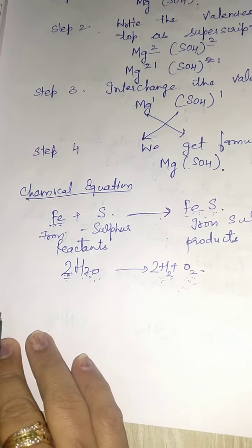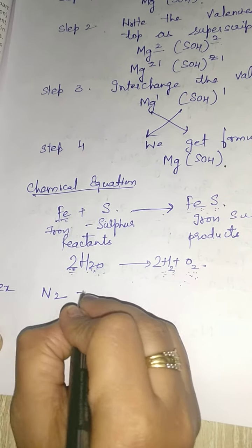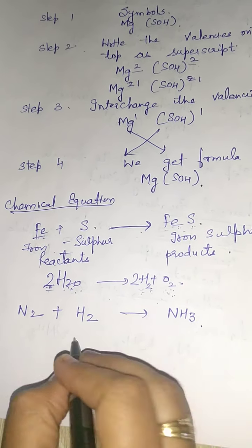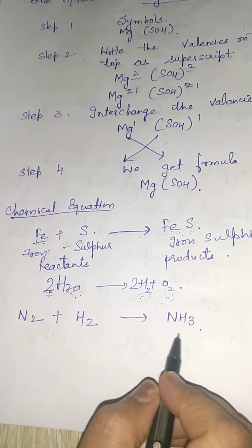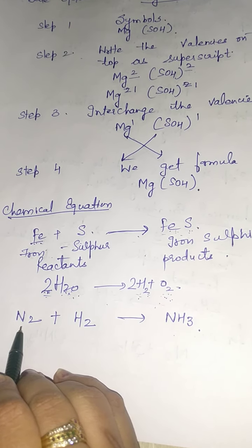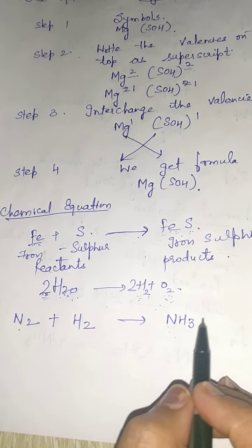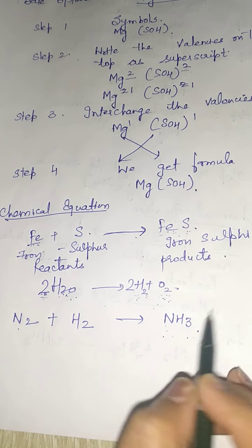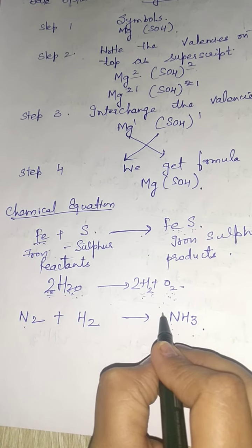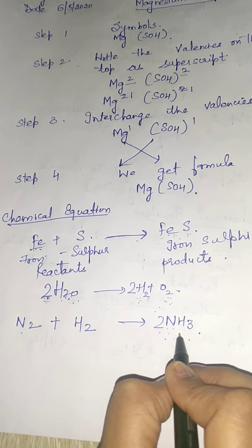Let's take one more example: nitrogen and hydrogen forming ammonia. Is this equation balanced? No, it is unbalanced. The number of nitrogen atoms on the reactant side is 2, but on the product side it is 1. To balance it, we will put a coefficient of 2 on the product side to increase the number of nitrogen atoms.